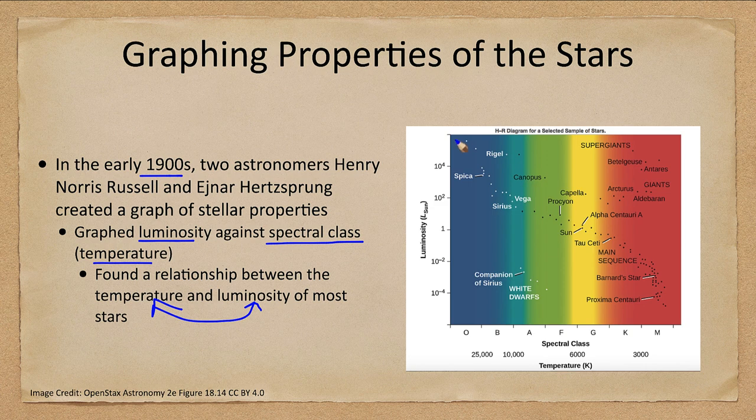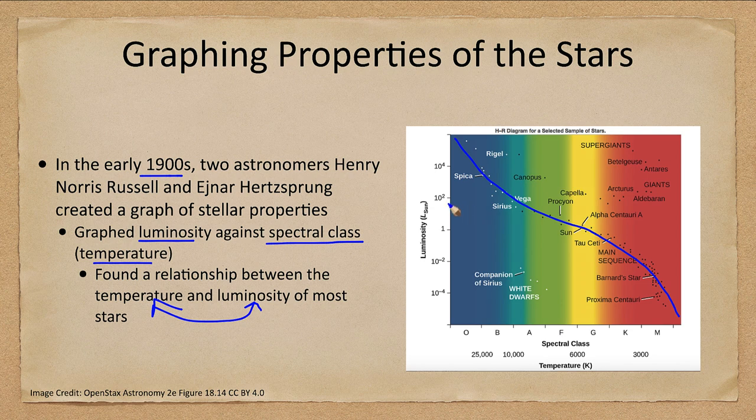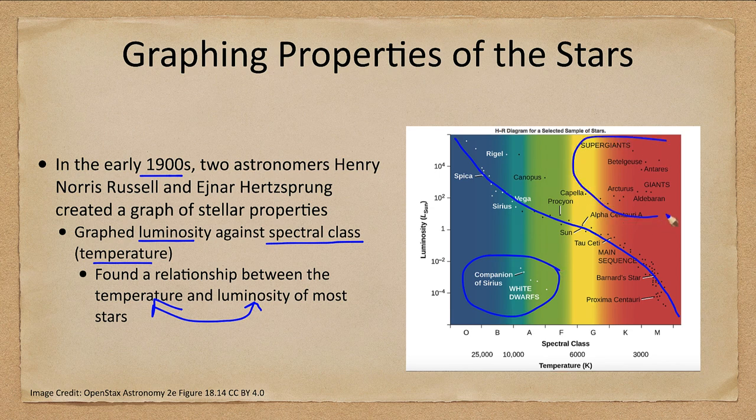For most stars we saw that there was a line going from upper left down to the lower right, and most of the stars fit there. There were certainly exceptions to each side, but the vast majority of stars fit what we call the main sequence of stars.